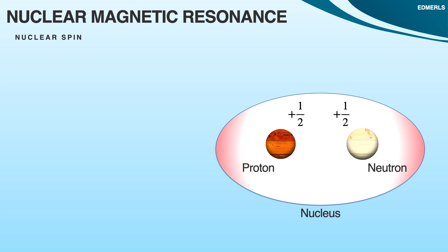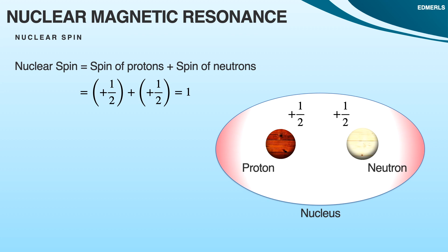If both proton and neutron have the same spin, the nuclear spin will be the sum of spin of proton and spin of neutron. In this case where protons and neutrons have the same spin, it will be plus half plus plus half which equals one. So the nucleus will have a spin of one.